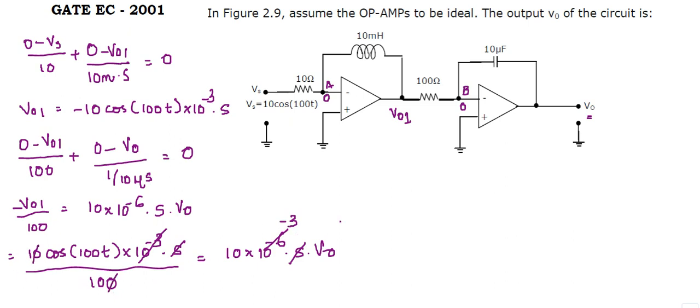So the value of V0 is equal to 10 cos of 100t. Hence the correct option.